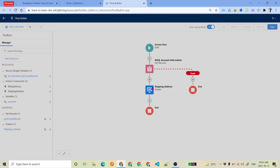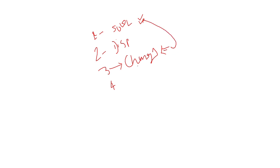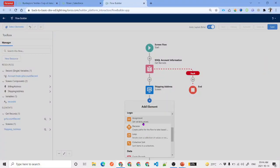Once the user provides input, we need to assign the values the user has entered back to the record, so the record gets the updated value, and then we can use Update Records. The flow steps are: Step 1 — SOQL to get the record; Step 2 — display the information; Step 3 — user changes the information; Step 4 — we use an Assignment element to push the changed values back to the record variable; then Step 5 — Update Records.